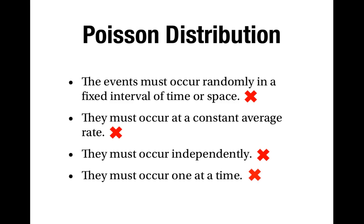Finally, I don't think it's always true that births occur one at a time, because if twins are born by elective caesarean, they emerge at pretty much the same time. So this shows that the number of births on a maternity ward over a period of 24 hours does not have the Poisson distribution.